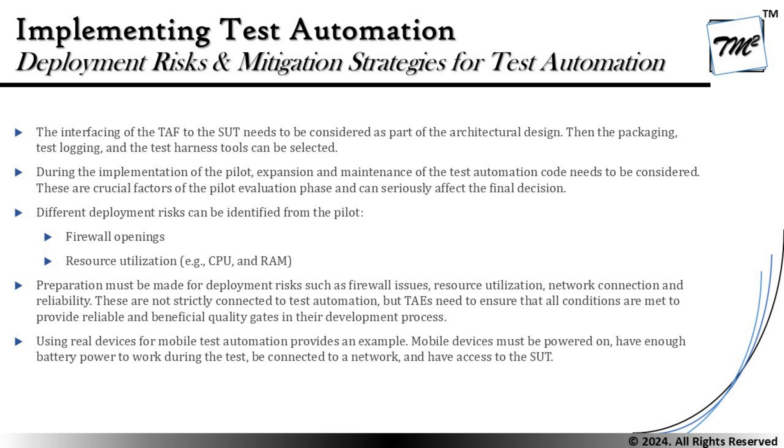Packaging, test logging, and test harness tools can be selected during implementation. The pilot, expansion, and maintenance of the test automation code need to be considered. There are crucial factors in the pilot evaluation phase that can seriously affect the final decision. When it comes to the automation architecture, the TAF plays a vital role in interacting with the SUT, comprising the definition layer, execution layer, and adaptation layer. If these components are not fulfilling their roles, the ability to connect and perform activities on the SUT may fail. This should all be considered right from the architecture and design phase — what could be the challenges of putting this tool chain together into a test automation framework — and we should plan for any such risks right there.